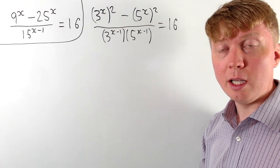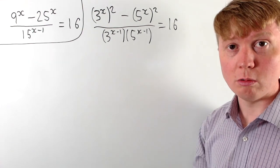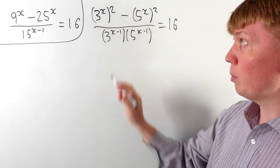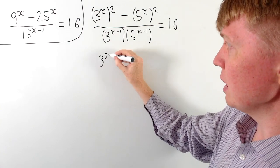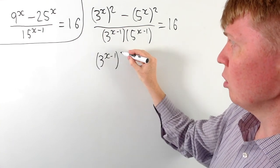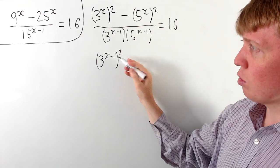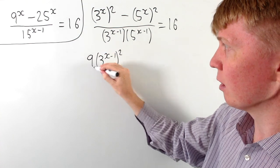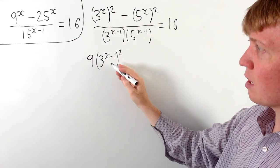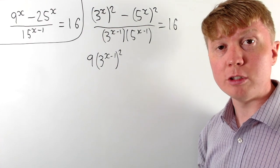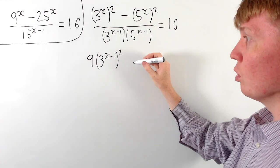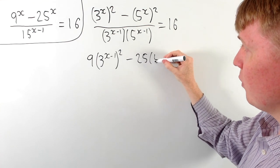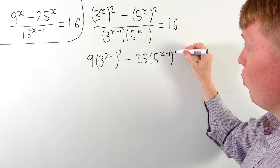In the denominator we've got powers of x minus 1, whereas in the numerator we've got powers of x. We can deal with this by replacing 3 to the x in the numerator by 3 to the x minus 1 all squared. We've taken out 2 powers of 3, so we need to multiply by 3 squared, or multiply by 9 to cancel. So 9 times 3 to the x minus 1 all squared is equivalent to our 3 to the x all squared. Similarly we take out 2 powers of 5, giving us 25 times 5 to the x minus 1 all squared.